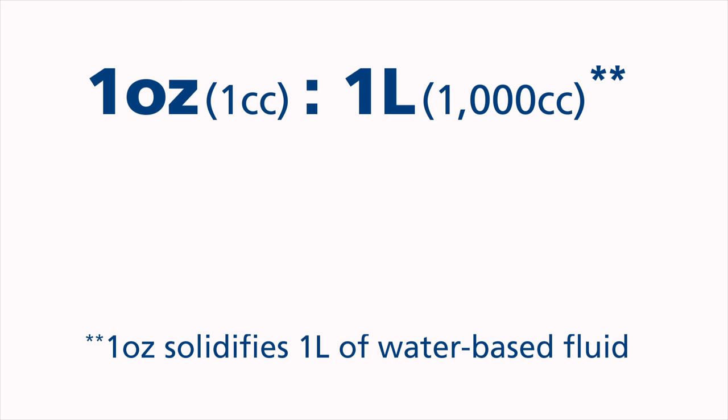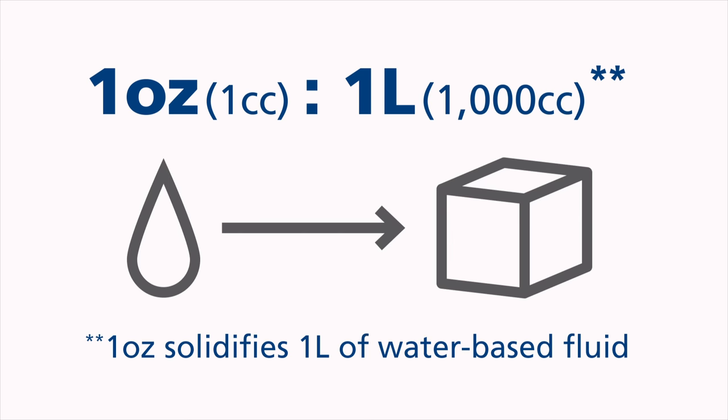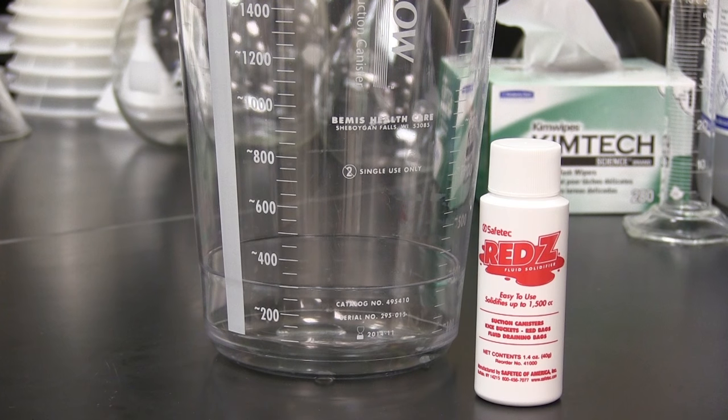All three packaging options have the ability to solidify more than 1,000 cc's of collected fluid per just one ounce of solidifier. The Red Z solidifier differs from Green Z by containing a small amount of chlorine to deodorize and control odor.